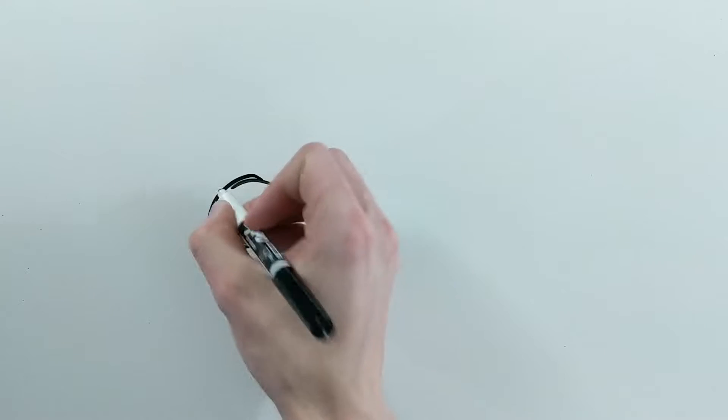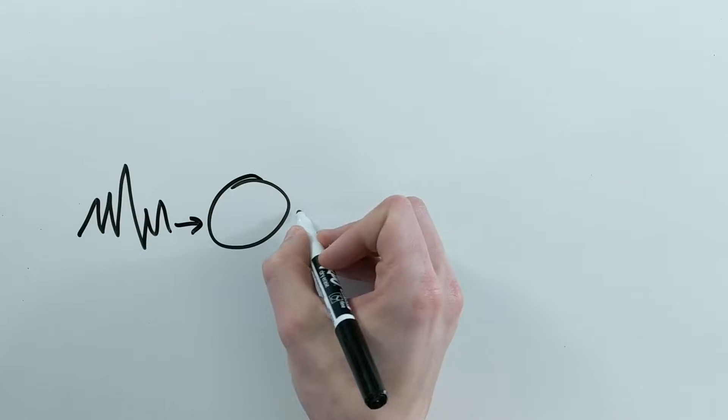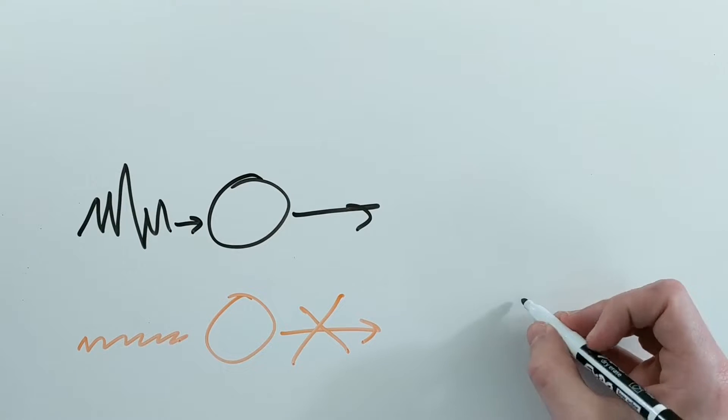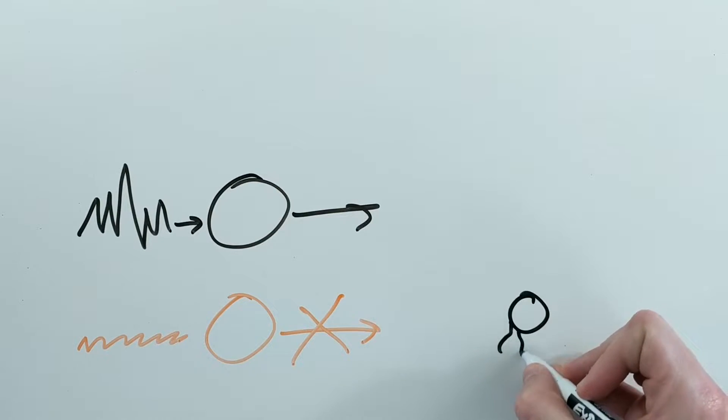The original idea behind the activation function is to only propagate signals that are important and ignore signals that aren't, similar to how neurons in our brain propagate signals.